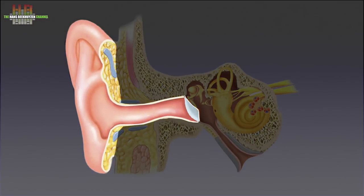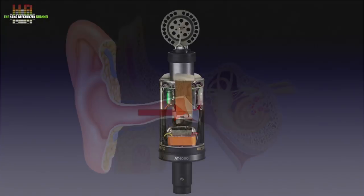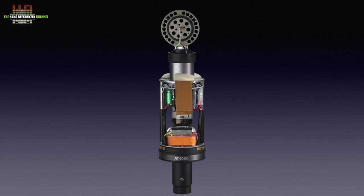The external ear starts at the pinna or earcup that reflects the perceived sound into the ear canal. This canal amplifies the mid frequencies. At the end of the canal the sound hits the eardrum. This can be seen as the microphone, or rather the front part of the microphone, the membrane.